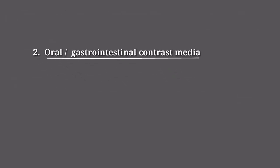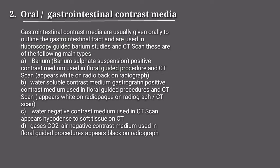Oral or gastrointestinal contrast media are usually given orally to outline the gastrointestinal tract and are used in fluoroscopic guided barium studies and CT scan. The main types are: barium sulfate suspension, a positive contrast medium used in fluoroscopy-guided procedures and CT, appearing white and radio-opaque on radiograph and CT scan; water-soluble contrast media such as Gastrografin, also a positive contrast medium appearing white on radiograph; water as a negative contrast medium used in CT scan; and gases such as carbon dioxide and air, negative contrast media used in fluoroscopy-guided procedures appearing black on radiograph.